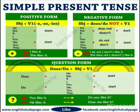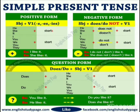I, you, we, they ke saath s or es nahi lagta. So I, you, we, they start. When making an interrogative sentence, you will bring do or does outside. Does he start? Do you start? He, she, it, any name, and singular ke saath hum s or es ka use karte hain. I, we, you, they, and plural ke saath s or es nahi lagta.